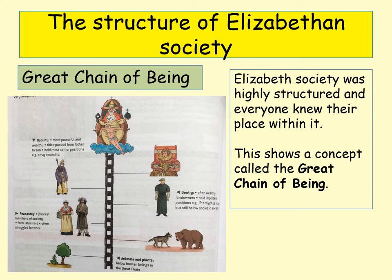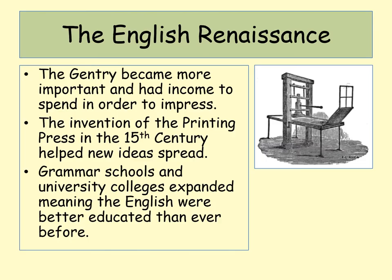Below the gentry, you've got the peasantry, and then animals and plants within the Great Chain of Being. During the time of Elizabeth, England had started to go through a renaissance. One of the key things that enabled this was the growth of the printing press, which allowed more books and ideas to be spread. Education, for example, was better than it had been before.